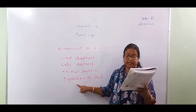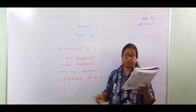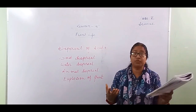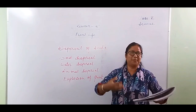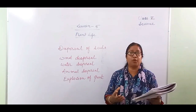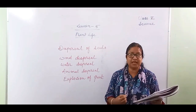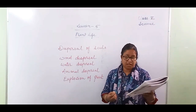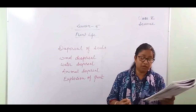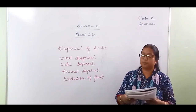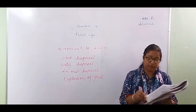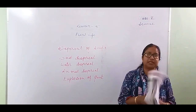Fruit and seeds are scattered with the help of wind, water, animals, and by explosion. You know a bomb explosion — fruit also explodes, like a pea plant. Wind, water, and animals are called agents of dispersal.